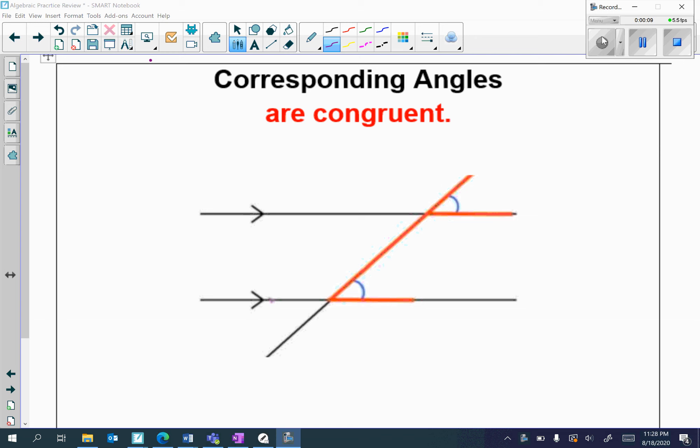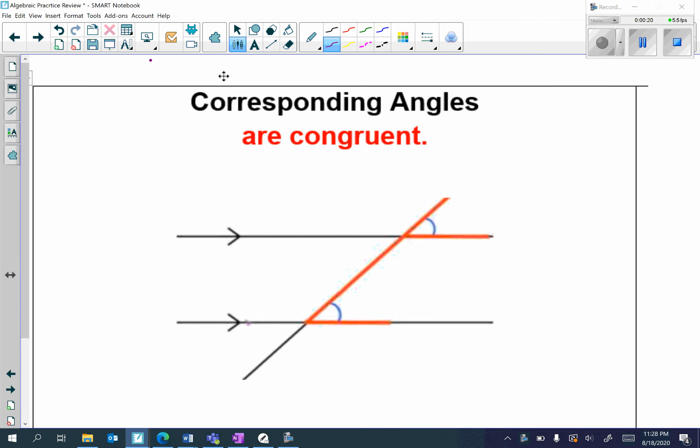The first definition we will go over is for corresponding angles. Corresponding angles are congruent. Remember that corresponding angles mean that they're in the exact same position.